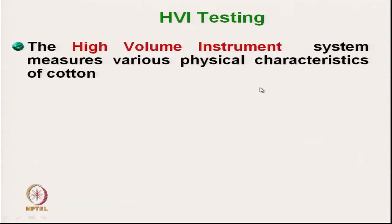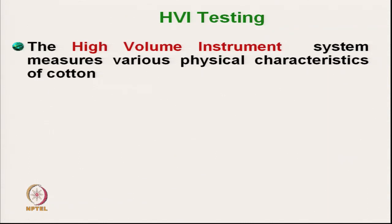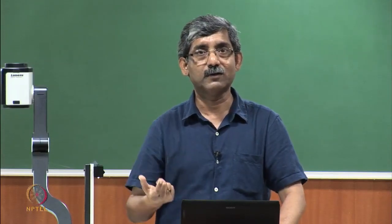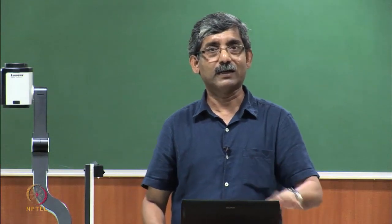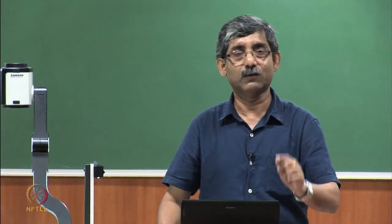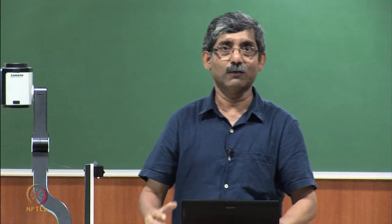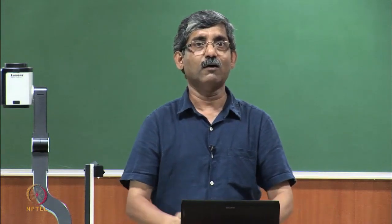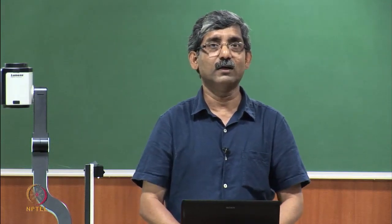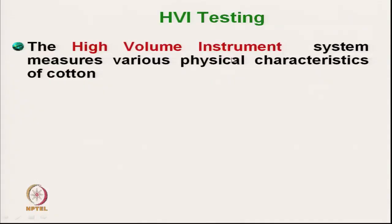First we will discuss the High Volume Instrument testing. This system measures various physical characteristics of cotton fibre. In the last segments, a particular technique was used for measurement of particular characteristics. But in the High Volume Instrument it is a combination of instruments giving an overall characteristic — not a single instrument but a total system, which is why we call it the High Volume Instrument system.